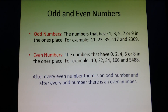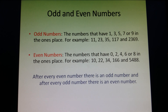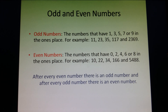The next topic is odd and even numbers. First we have odd numbers. The numbers that have 1, 3, 5, 7, or 9 in the ones place are odd numbers. In other words, numbers which are not a perfect pair of 2 are odd numbers. For example: 11, 23, 35, 117, and 2369.